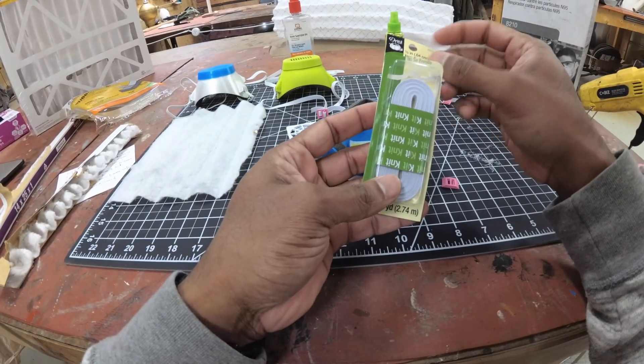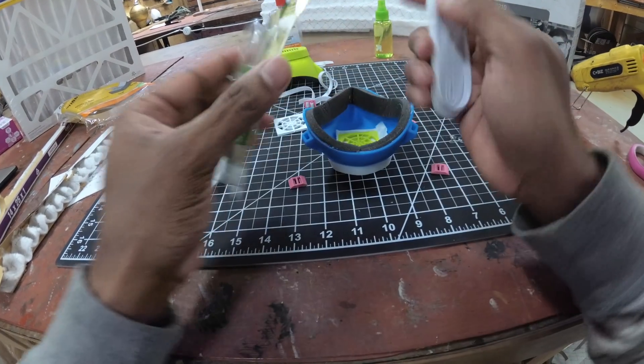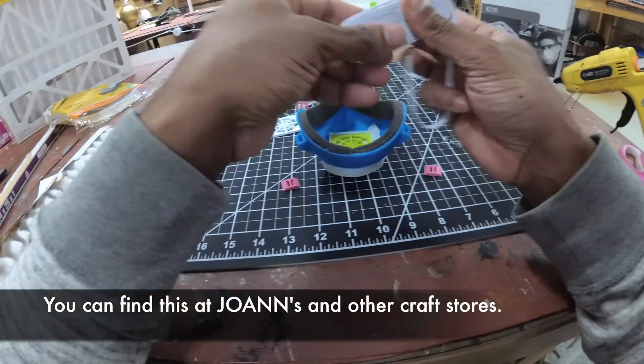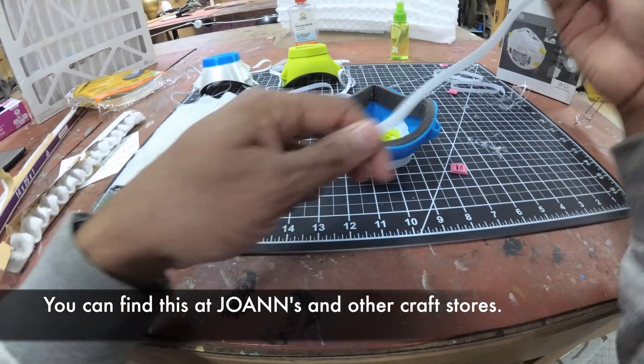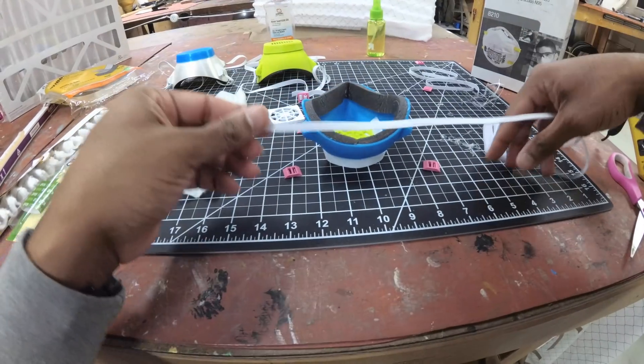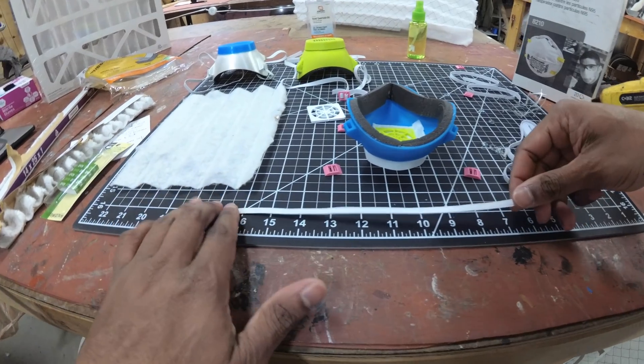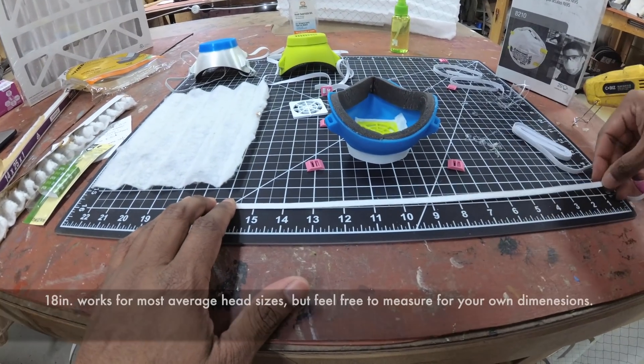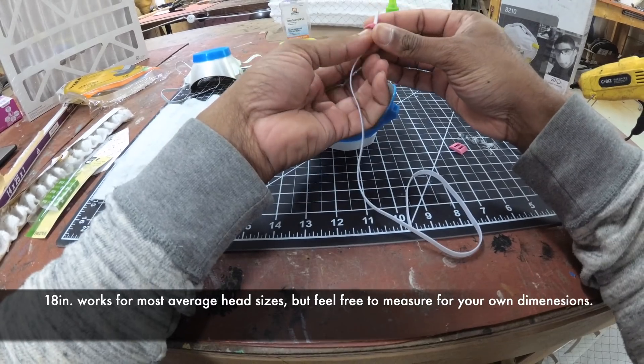What I'm going to do is cut two strips of this at 18 inches. The first thing I'm going to do is run the elastic through the middle. If you look at your little plastic piece, there are three columns on the inside.